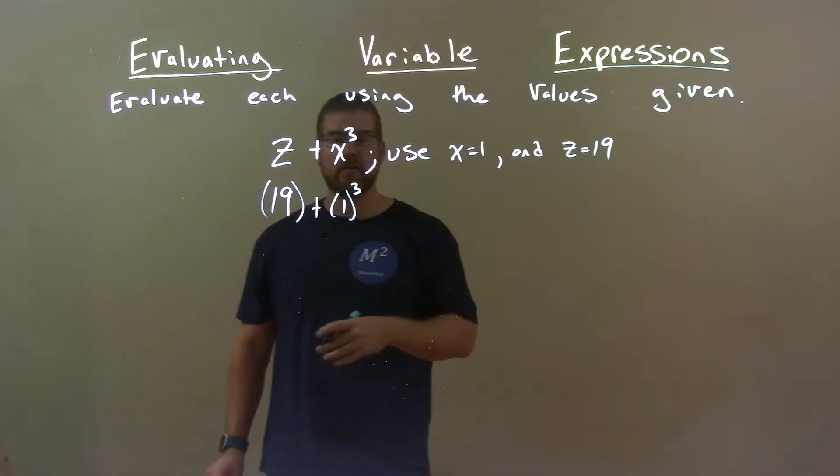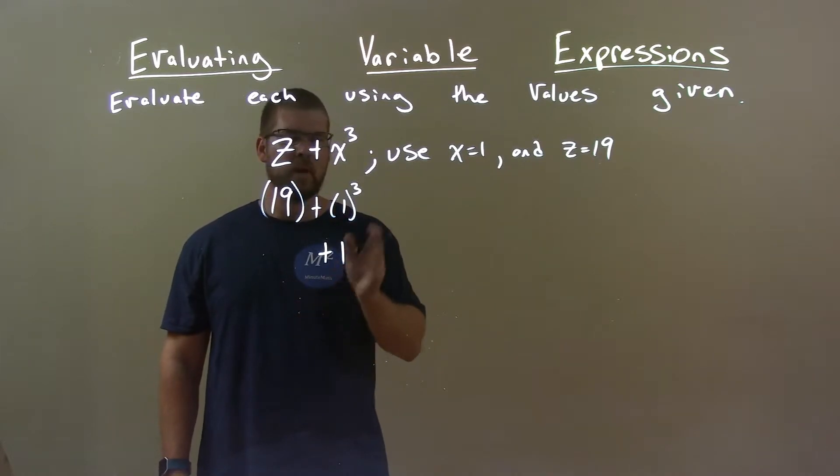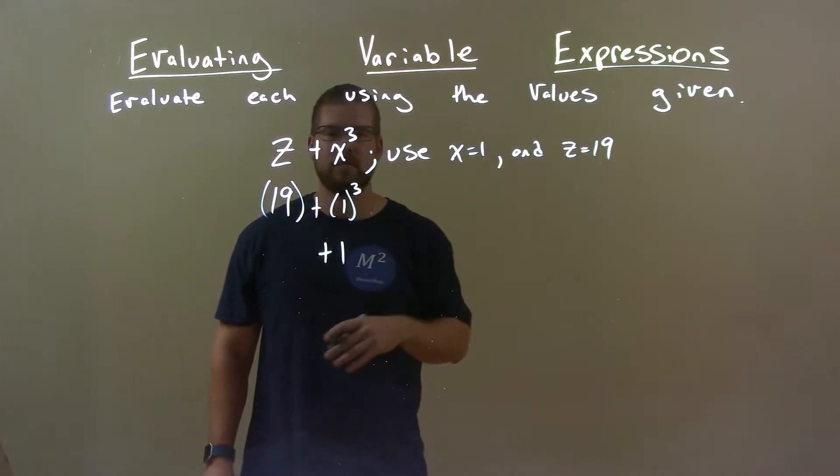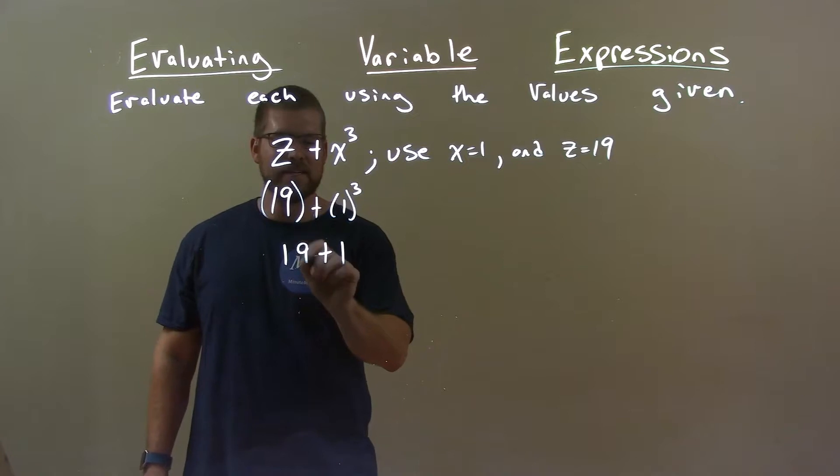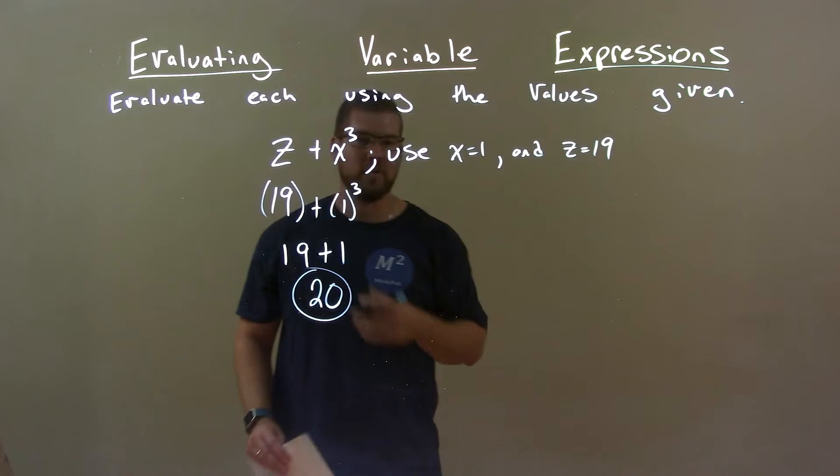Okay, now let's simplify. 1 to the third is just 1. Remember, 1 to the third means 1 times 1 times 1, which is 1. Bring down the 19. 19 plus 1 is 20. So our final answer here is just 20.